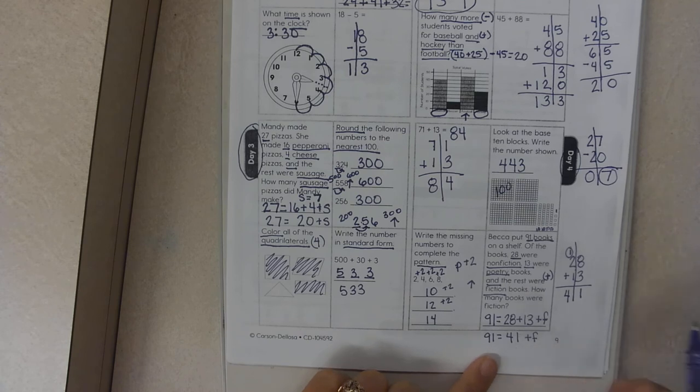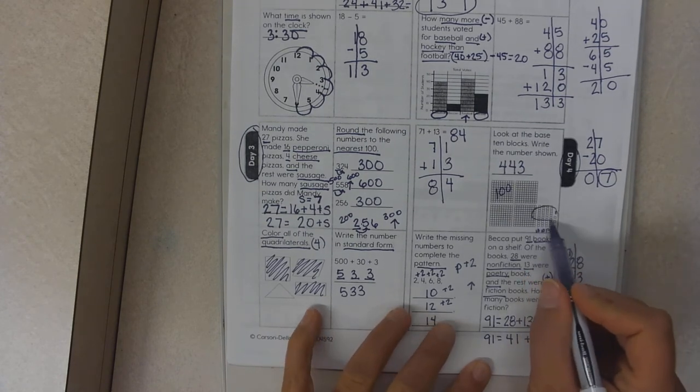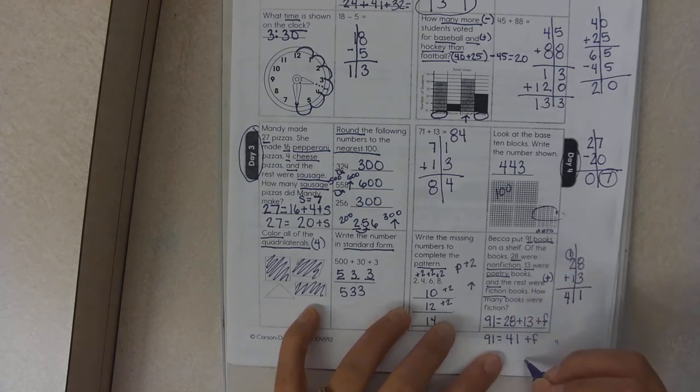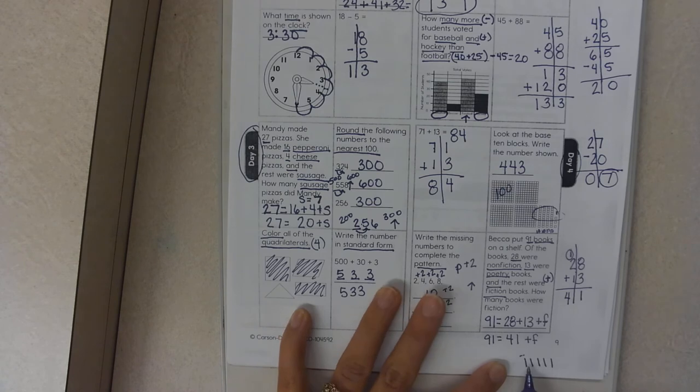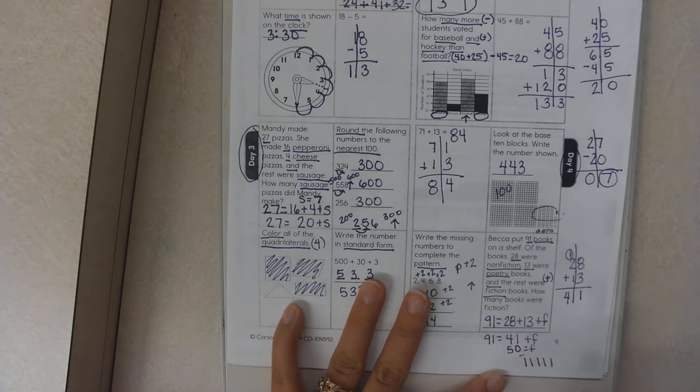I'm going to count up. I know that I can't count with my fingers this much. However, I can count using base ten blocks. 41, if I add 10 it would be 51, 61, 71, 81, 91. These are worth ten. Ten, twenty, thirty, forty, fifty. So 50 equals F.